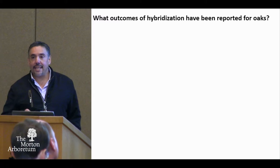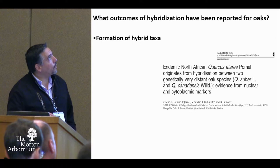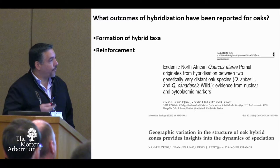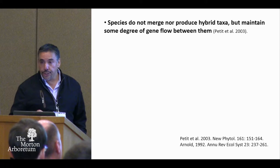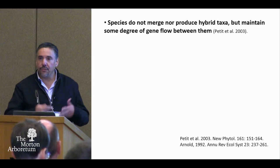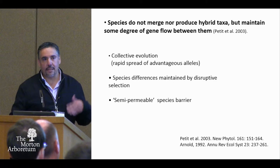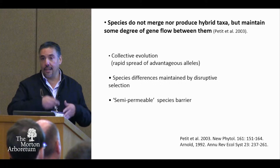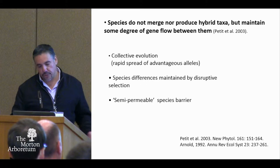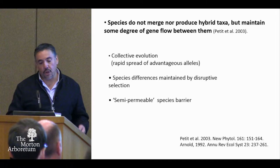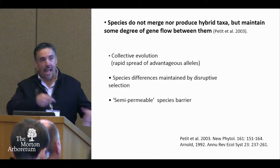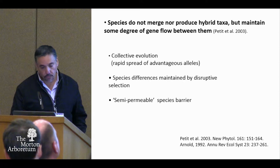What outcomes of hybridization have been reported for the oaks? Several ones, including the formation of hybrid taxa and the reinforcement of reproductive barriers. But the most frequent outcome seems to be when the species do not merge nor produce hybrid taxa, but maintain some degree of gene flow between them. This raises very interesting questions about the possibility of collective evolution — the rapid spread of advantageous alleles among sets of species — and also the possibility that species differences are maintained by disruptive selection, referring to the concept of a semipermeable species barrier that can stop some genes from introgression but actively incorporates other genes into the genomes of the species.